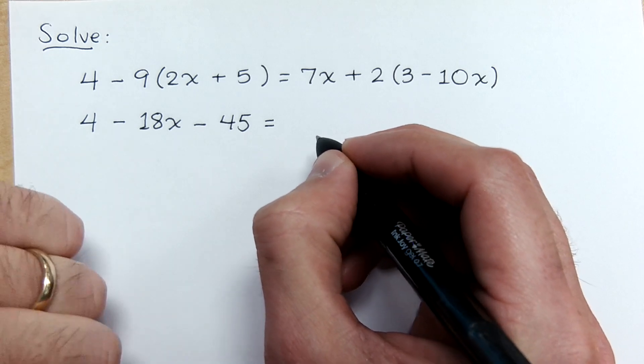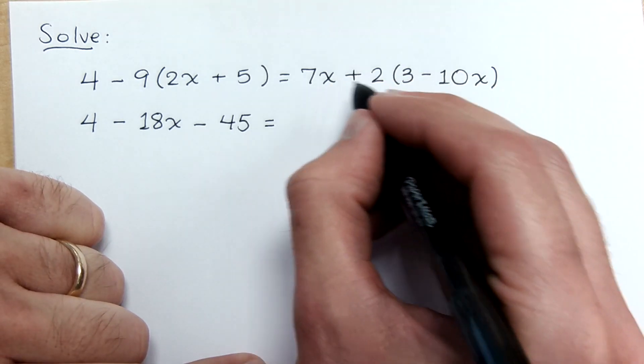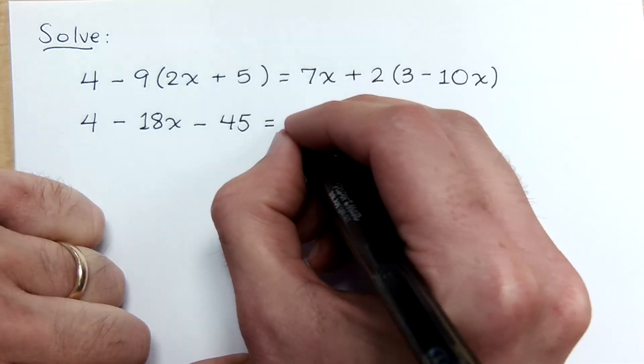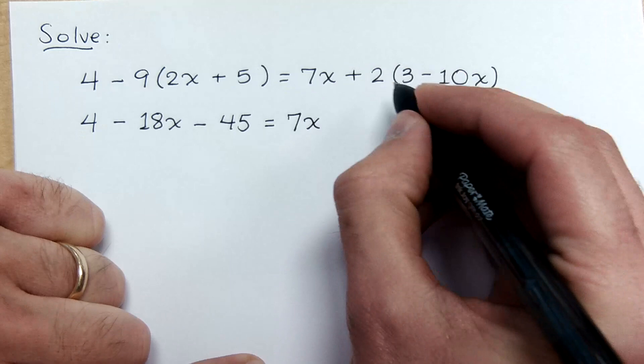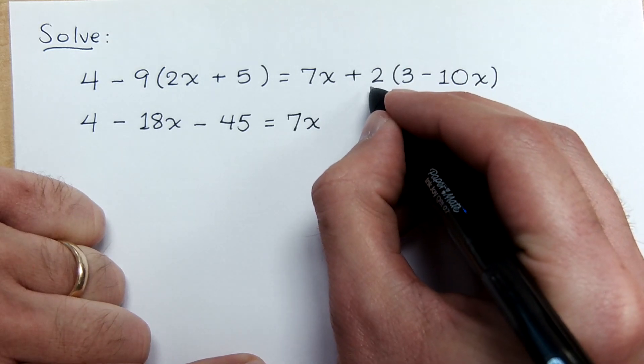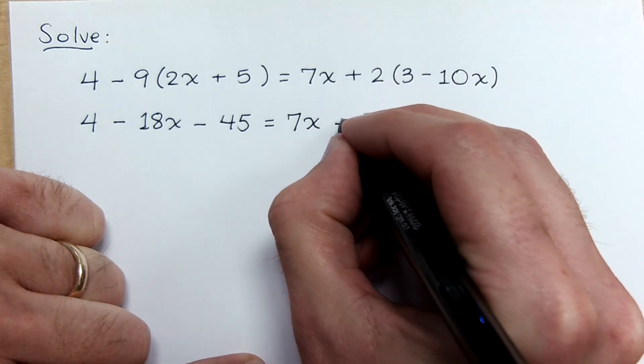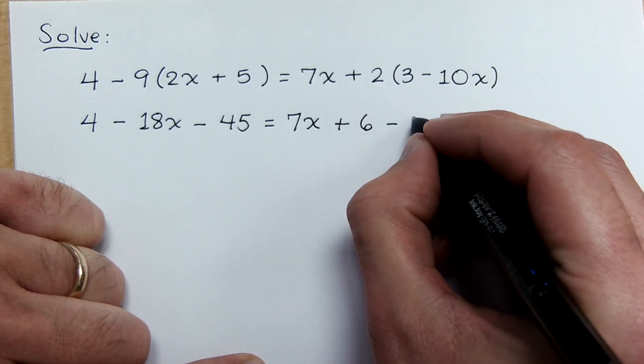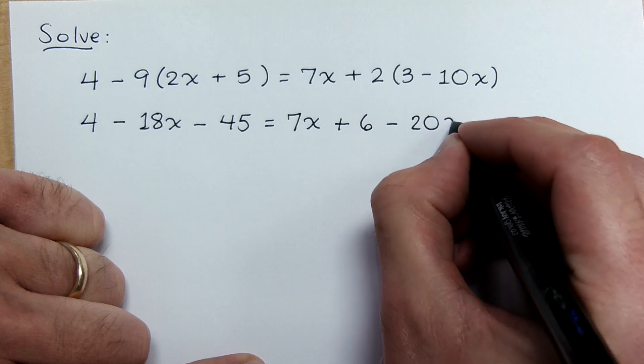On the right side of the equation, does the 7x touch the 3 minus 10x? No. He stays out right here. But we do need to distribute the 2. Should be no problem. 2 times 3 is 6. 2 times negative 10x is negative 20x.